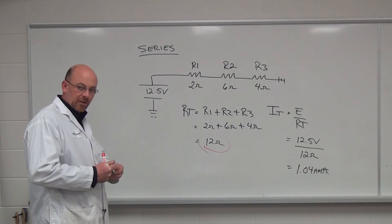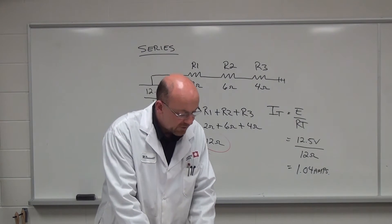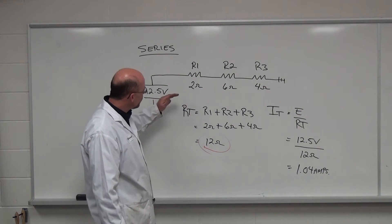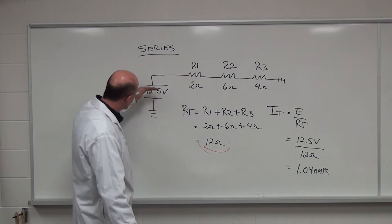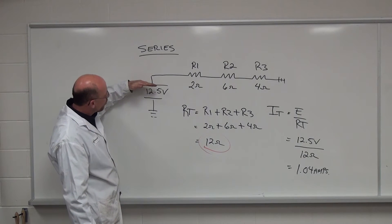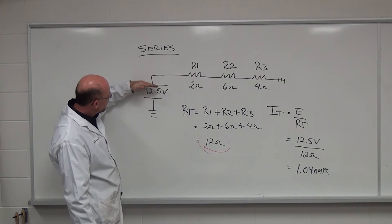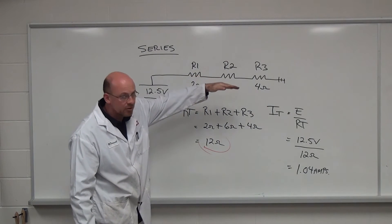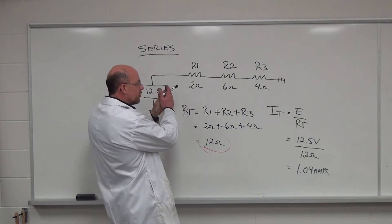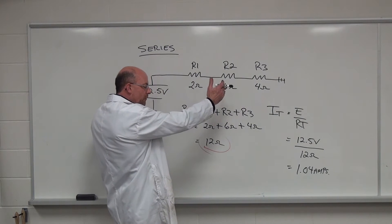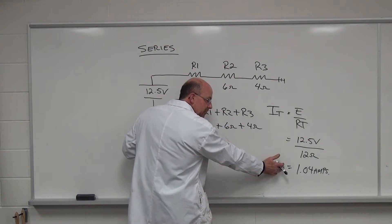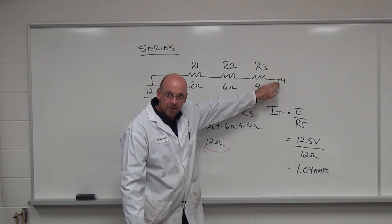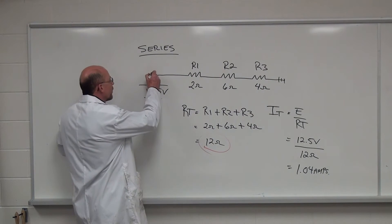So the next thing we have to do in this particular circuit is find out what the voltage drops are. Because whenever we consume voltage or electrical pressure from this point, we're using the electrical pressure to push the current through each of the resistance values. Until we consume the value of current that we've established in the circuit.